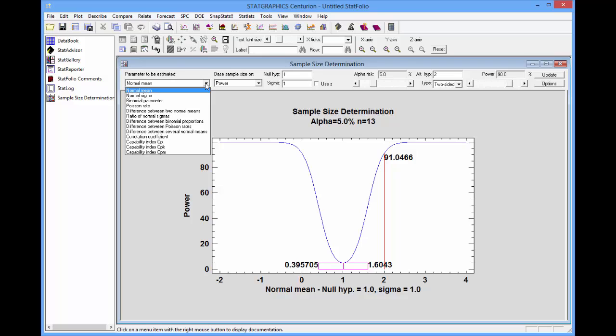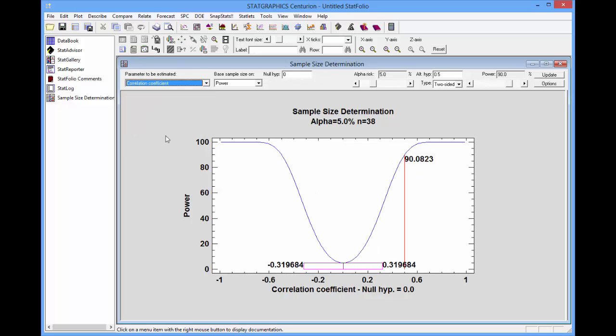The drop-down list at the left is where I specify the parameter of interest, which in this case is the correlation coefficient.